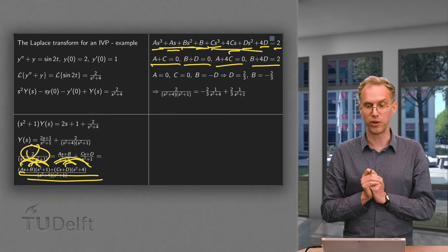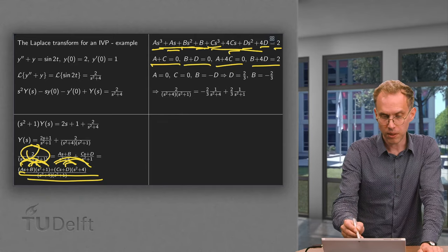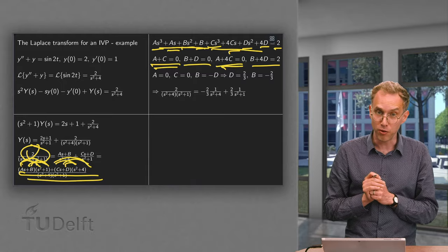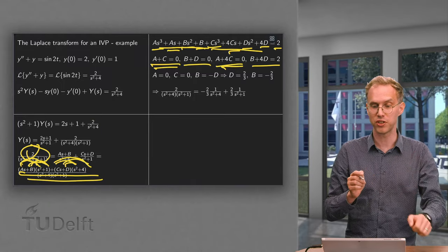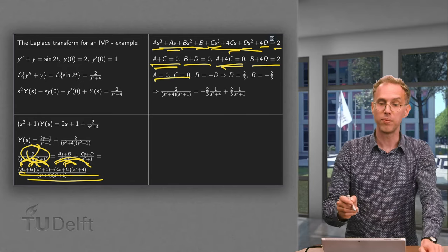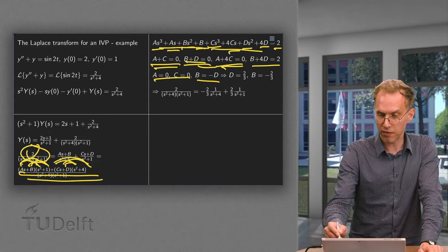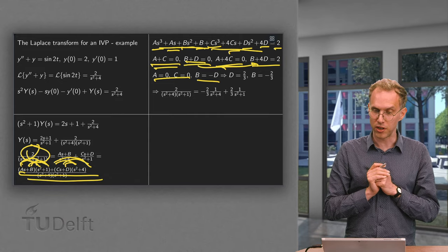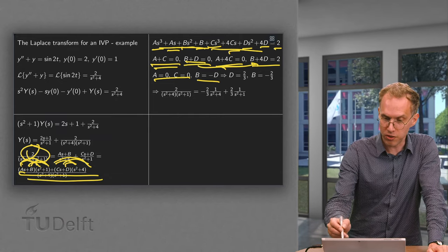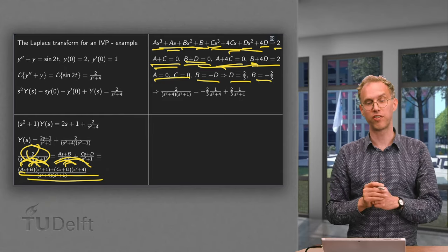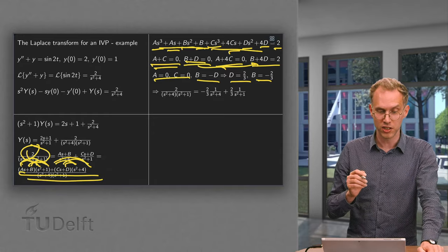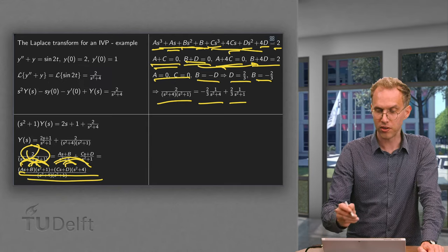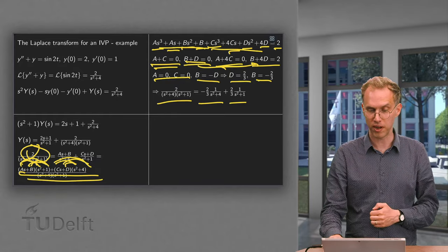However, the equations split into two pairs. For A and C: A + C = 0 so A = −C; substituting into A + 4C = 0 gives −3C = 0, so C = 0 and A = 0. For B and D: B = −D; substituting into B + 4D = 2 gives 3D = 2, so D = 2/3 and B = −2/3. We have completed the partial fraction separation.